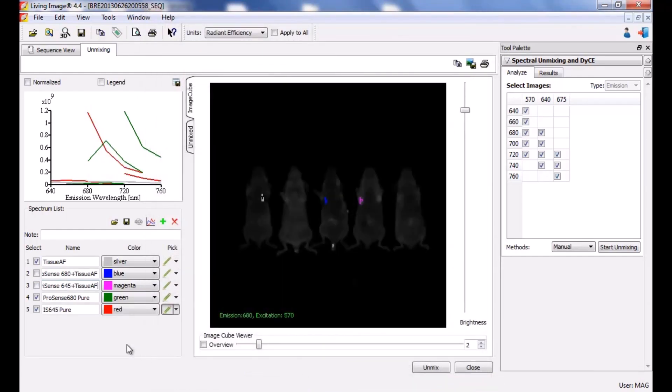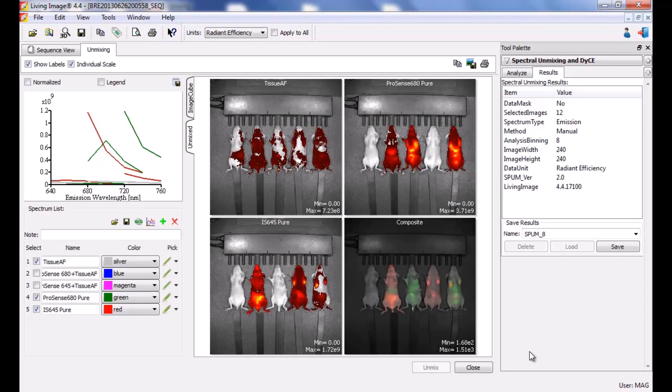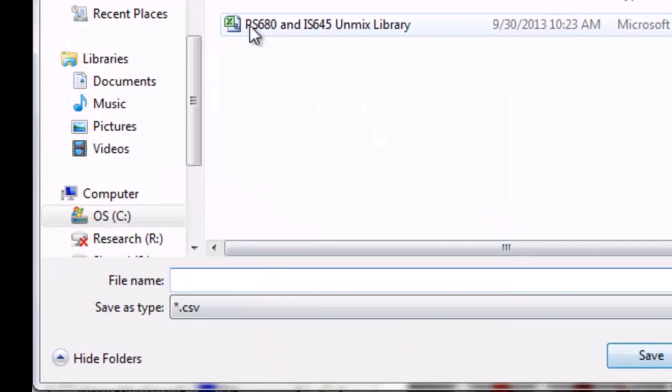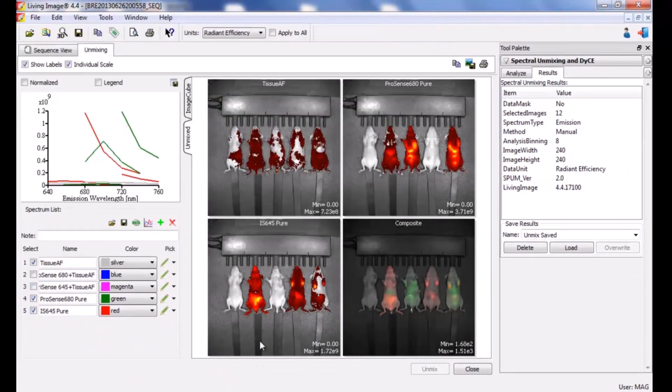After closing the window, the new pure components are now visible in the spectrum list. The software deselects the mix component and automatically selects the pure component. Click unmix. Our unmixing results appear automatically. Save your unmixing results. After the images are saved and you visually determine the unmixing was successful, save the library by clicking the floppy disk icon, add an appropriate name, and click save. The library you just saved can be used for any imaging experiment that uses the same mouse strain, probes, and filter selections.